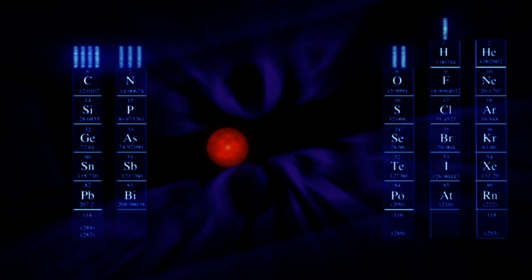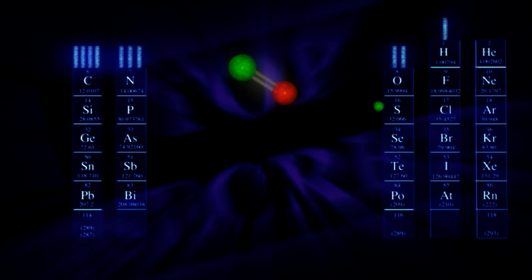This carbon atom wants to make four bonds. So let's give it a double bond with oxygen, and let's give a single bond to an OH molecule. That's a total of three bonds for the carbon. It still wants another. So let's give it another carbon for its fourth bond.